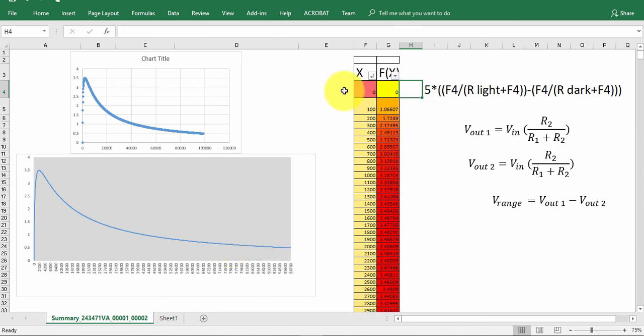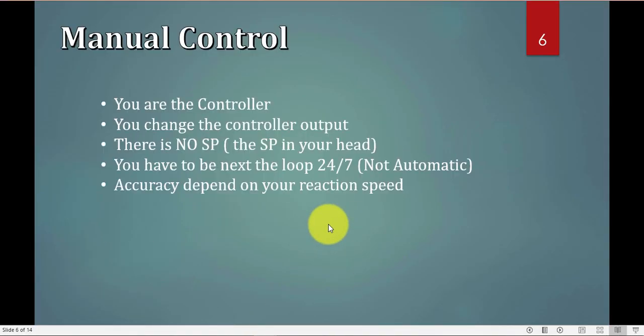So build your Excel sheet, do your calculation. This 5 is my output voltage. If I'm using the PLC, I'll change this to 10. You have to measure your R light and R dark, and remember the LED must face the LDR. Now, back to the PowerPoint. We will start with manual control in Simulink and Arduino.